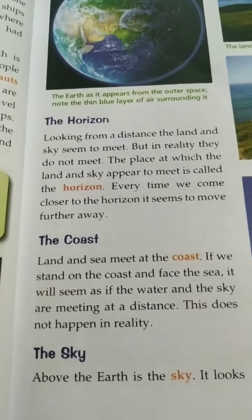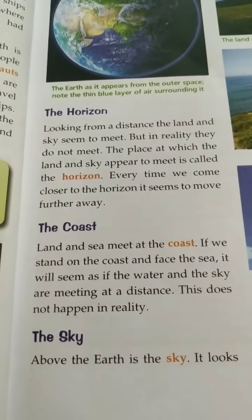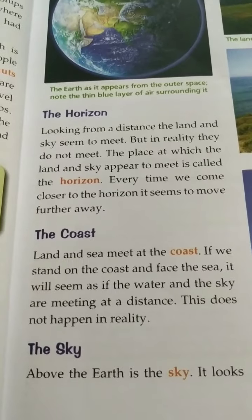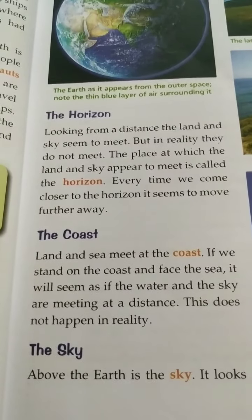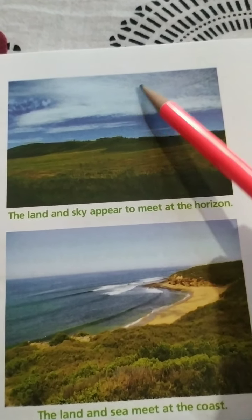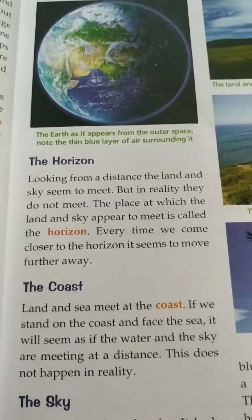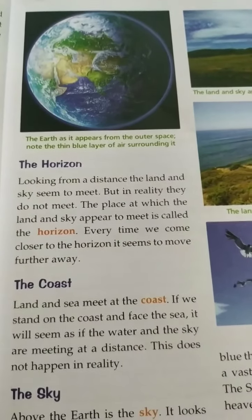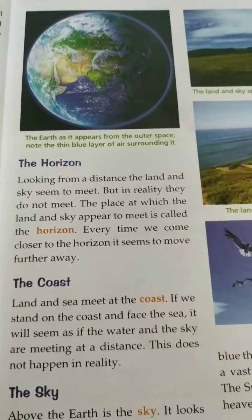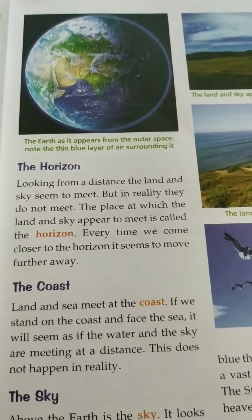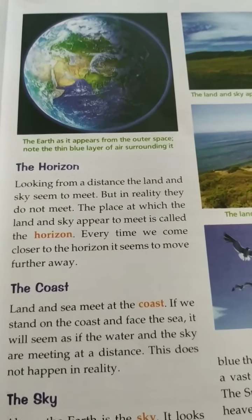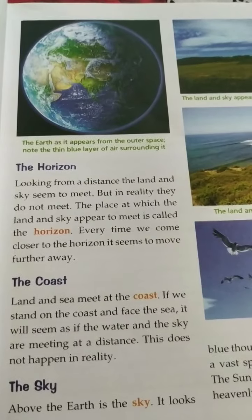Now we will discuss the horizon, the coast, and the sky. The horizon is the place at which the land and the sky appear to meet. Every time we come closer to the horizon, it seems to move further away. It appears that they meet, but in reality, they do not meet.